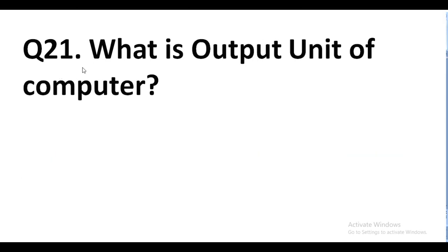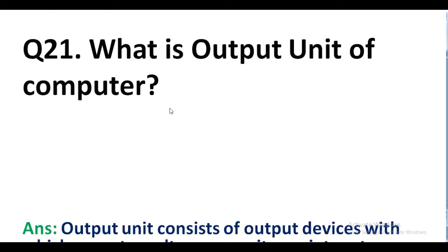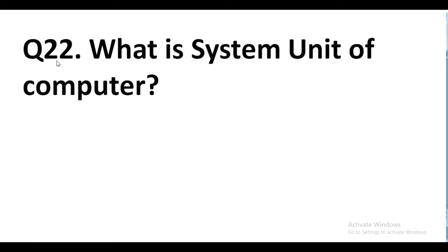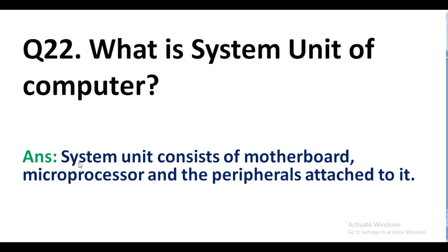Question number 21. What is the output unit of a computer? Answer. The output unit consists of output devices with which we get results. Examples: monitor, printer, etc. Question number 22. What is the system unit of a computer? Answer. The system unit consists of the motherboard, microprocessor, and the peripherals attached to it.